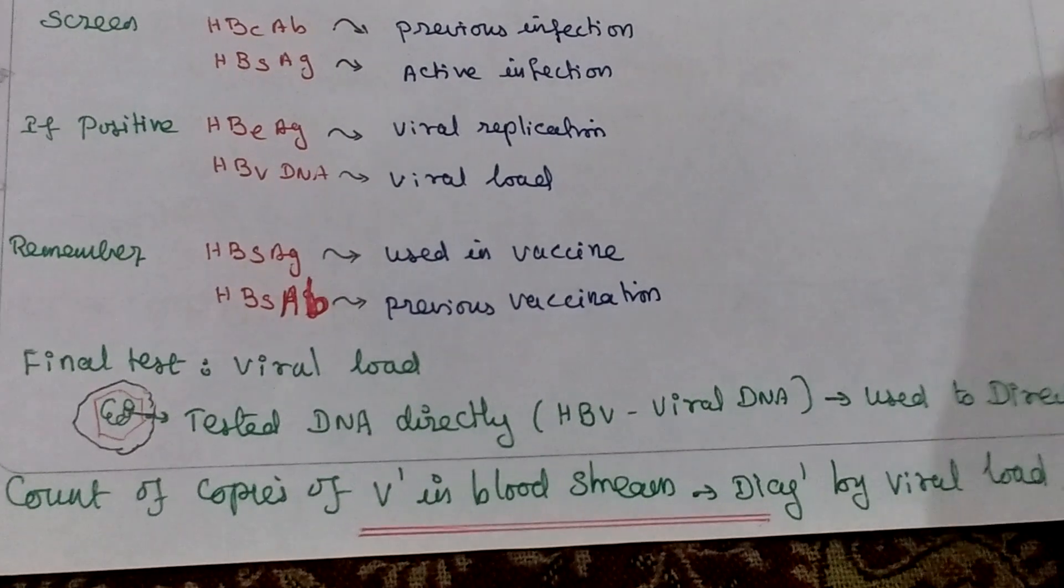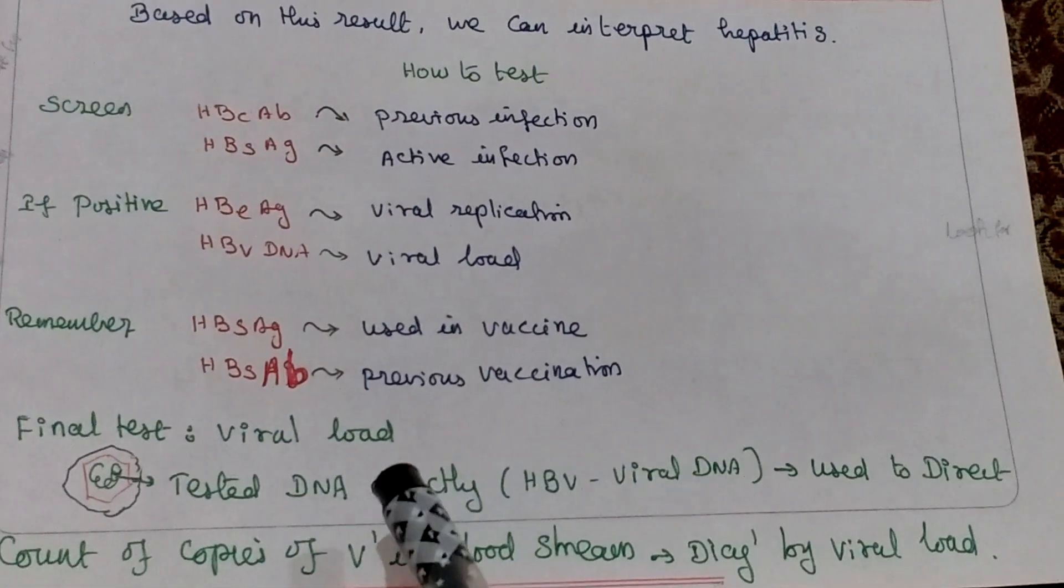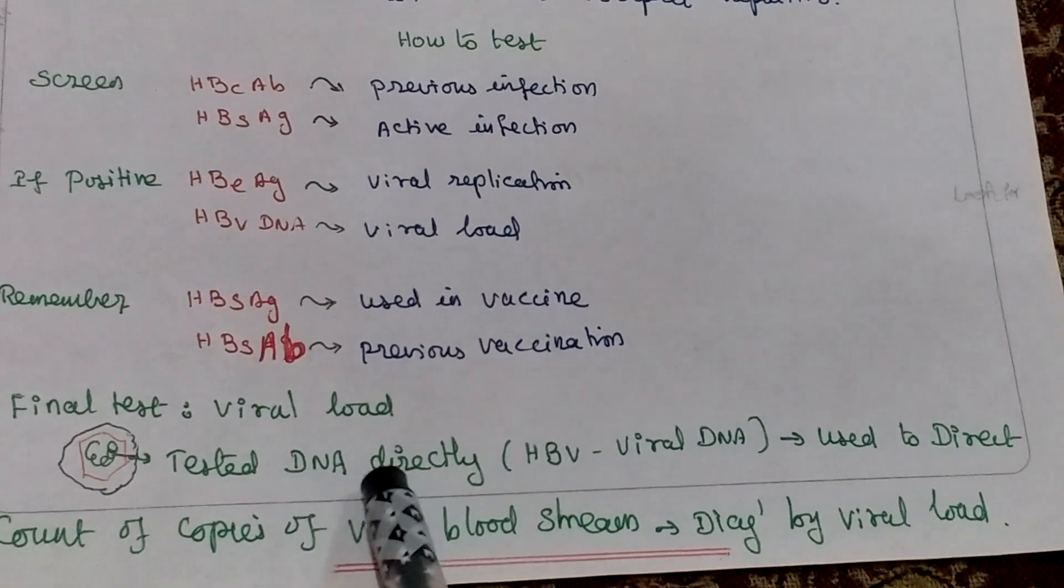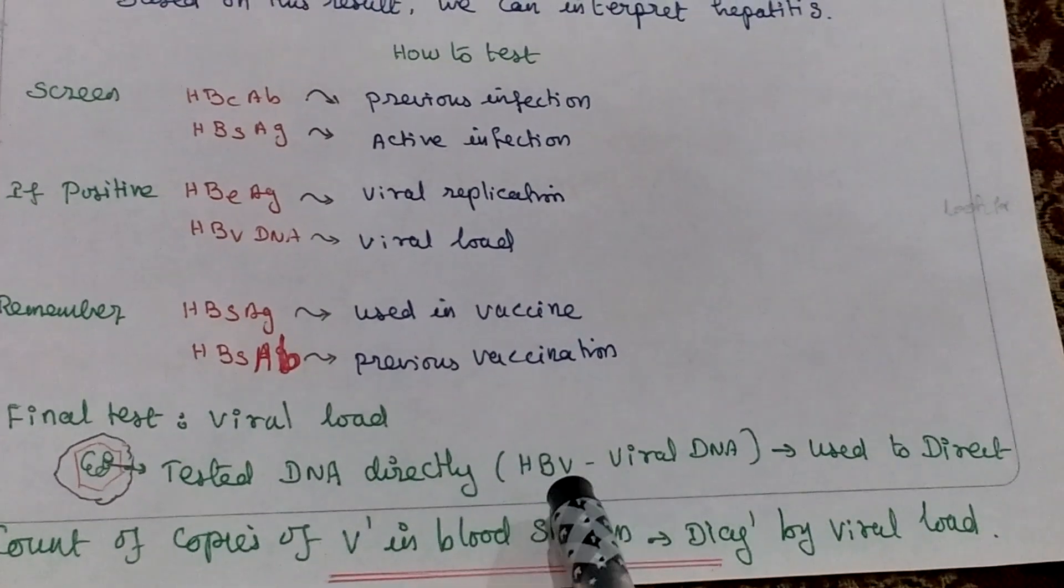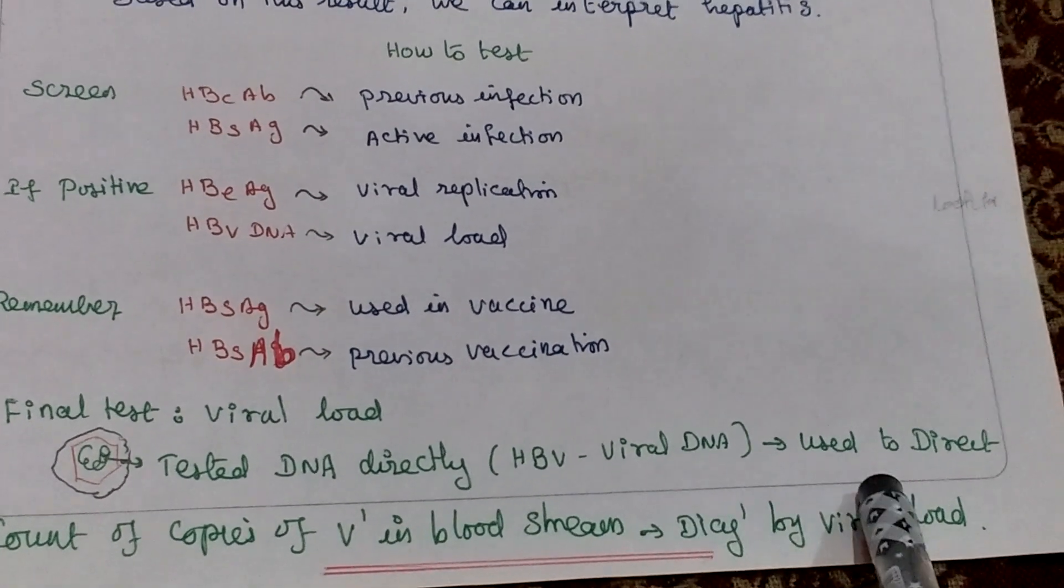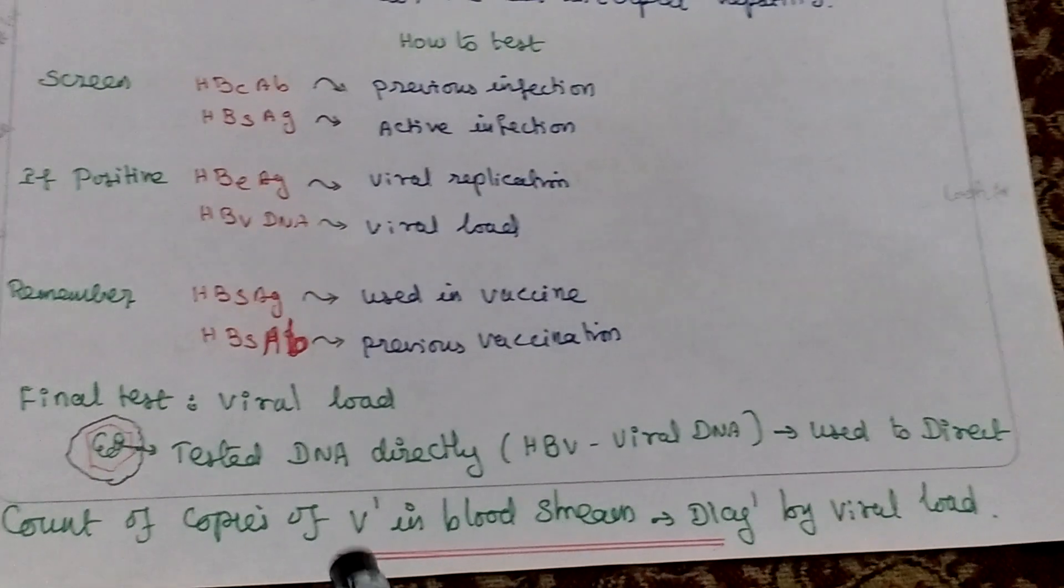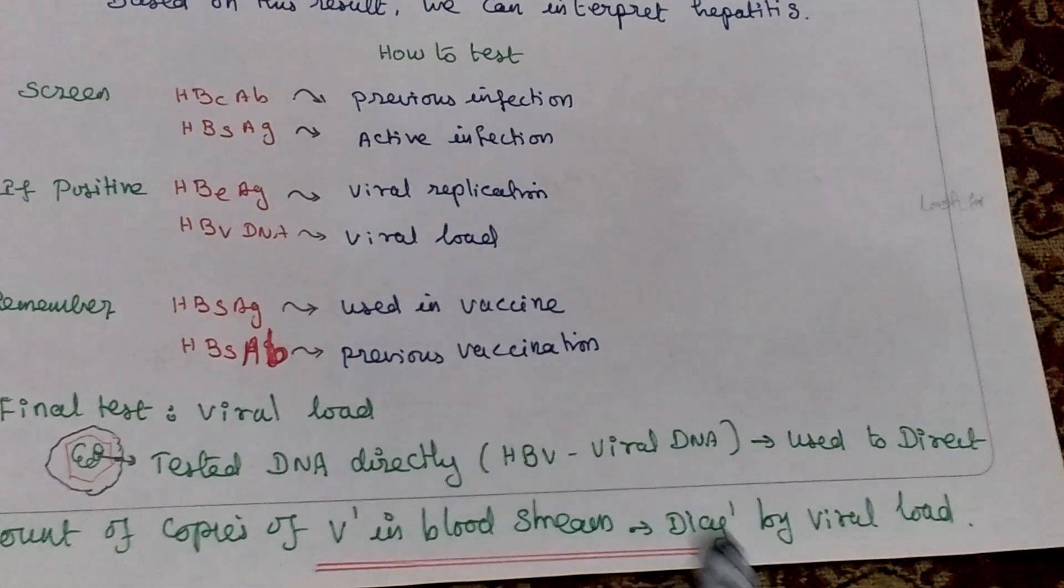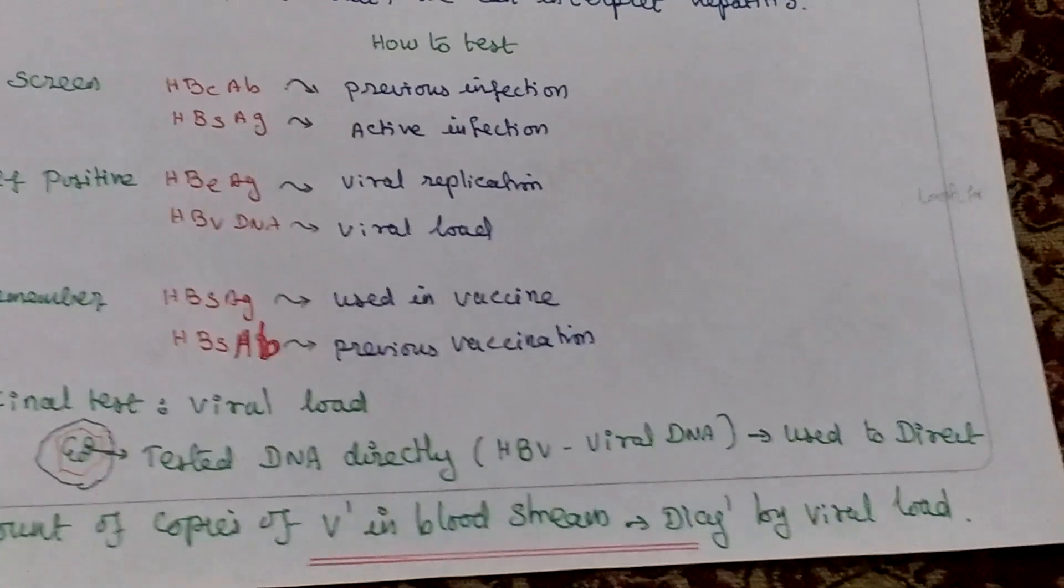What is viral load? This is the final test where we directly detect the DNA. HBV viral DNA is used to directly count copies of virus in bloodstream. This method is only used for diagnosis of viral load.